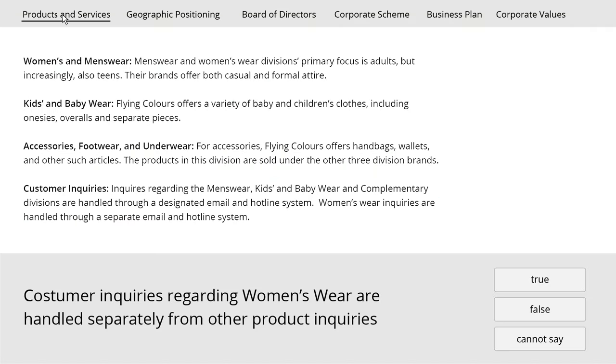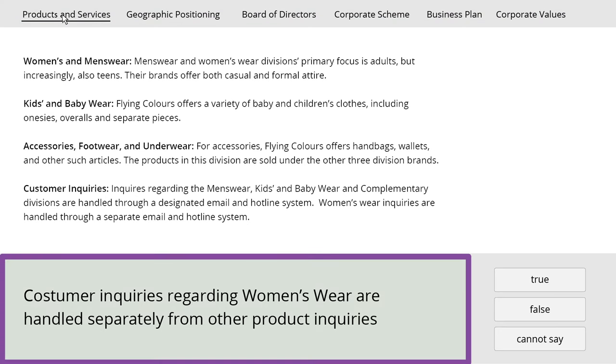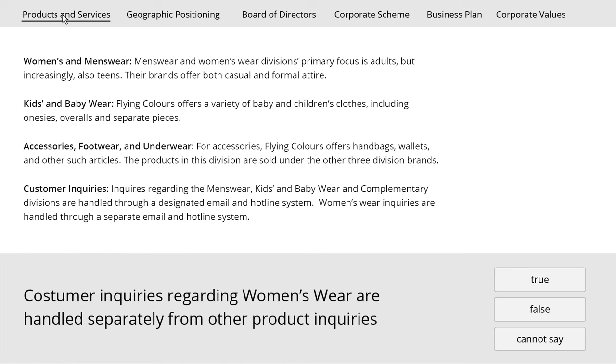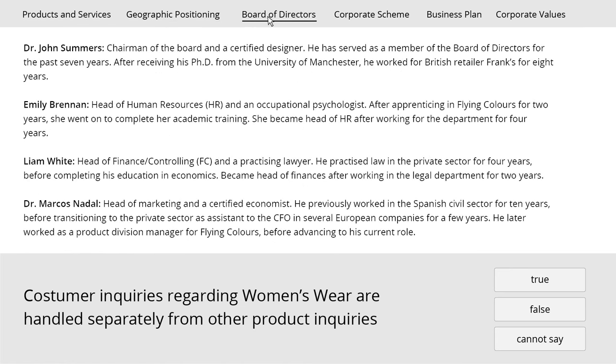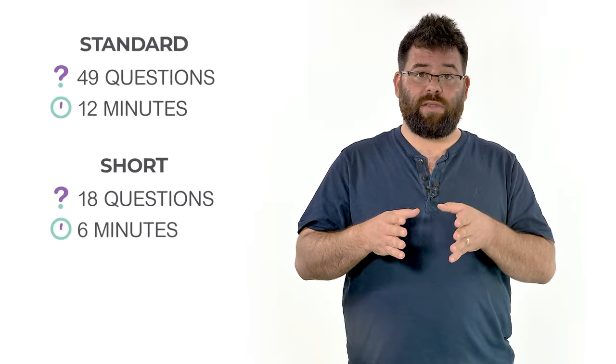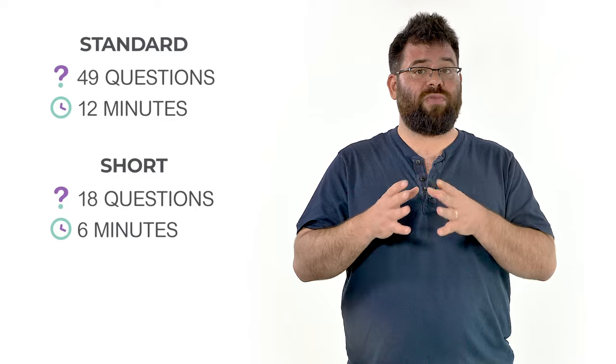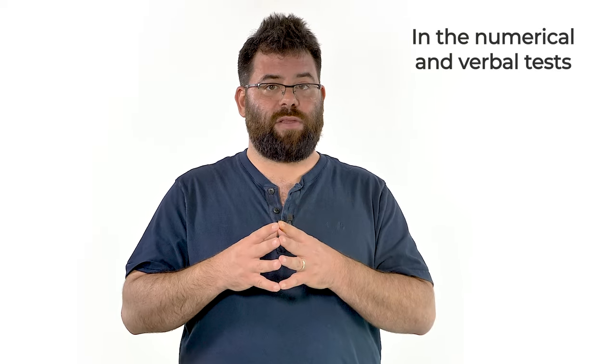The verbal reasoning test works exactly as the numerical one. Six tabs, a statement and three answer options. Yet this time, the tabs will contain textual data which you will need to interpret correctly to reach the right answer. As the numerical test, the verbal test also comes in two versions. One last thing about the numerical and verbal tests.